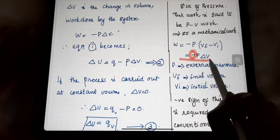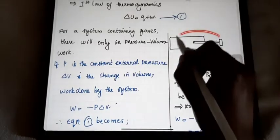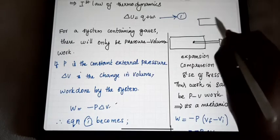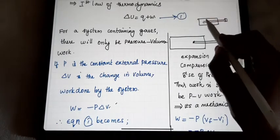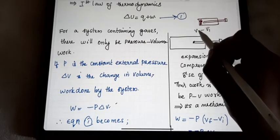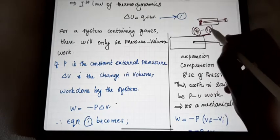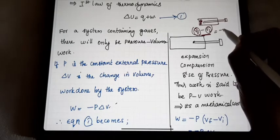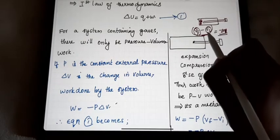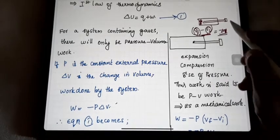Why are we giving the minus in the equation W = -PΔV? There is a certain reason behind it. Just imagine this is a compression. When we try to compress, what happens? Compression means the volume is reduced. That means we pressed, so the initial volume is more and the final volume is less. So VF minus VI will give a negative value. When we calculate that change, we get a negative value because the final volume is a smaller value and the initial volume is a bigger value. That is why the difference gives a negative value.